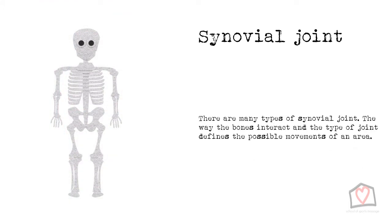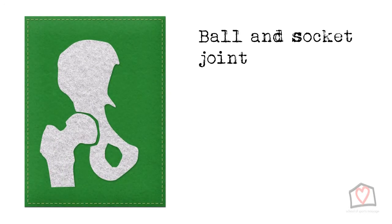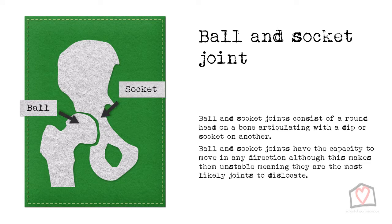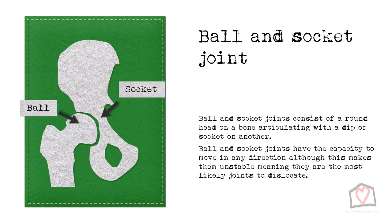There are many types of synovial joint, dependent on the way the bones interact, and the type of joint defines the movements possible in that area. The first and most movable of all synovial joints are ball and socket joints, whereby a round head on a bone articulates with a dip or socket on another. They have the capacity to move in any direction, although they are inherently unstable and therefore the most likely joints to dislocate. The hip and shoulder are examples of ball and socket joints.